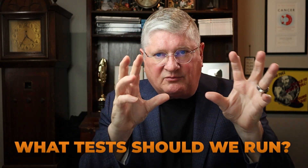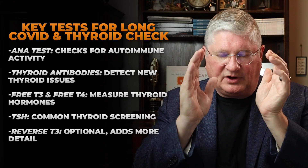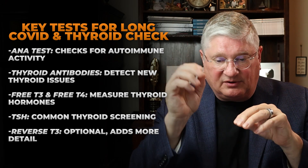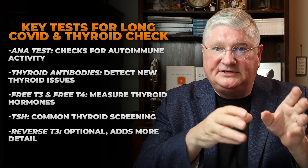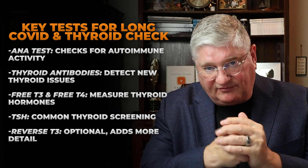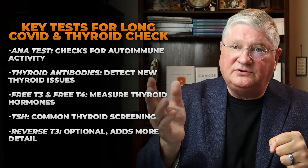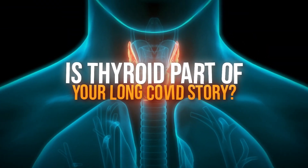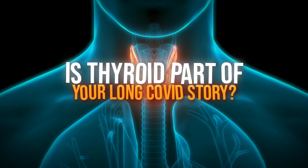In regard to thyroid testing, we want to do standard labs — chemistries, blood count, and so on. We want to add the ANA because that could be elevated. We want to add all the thyroid antibodies because those could be newly present. We want to test free T3 and free T4, as well as TSH, which is the usual test. And then you can also add on reverse T3. If you can do those things, at least you can screen and determine whether thyroid is part of your long COVID problem or not.